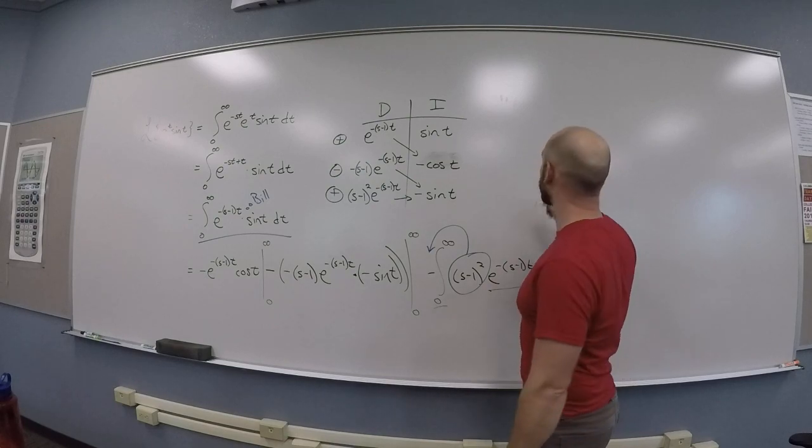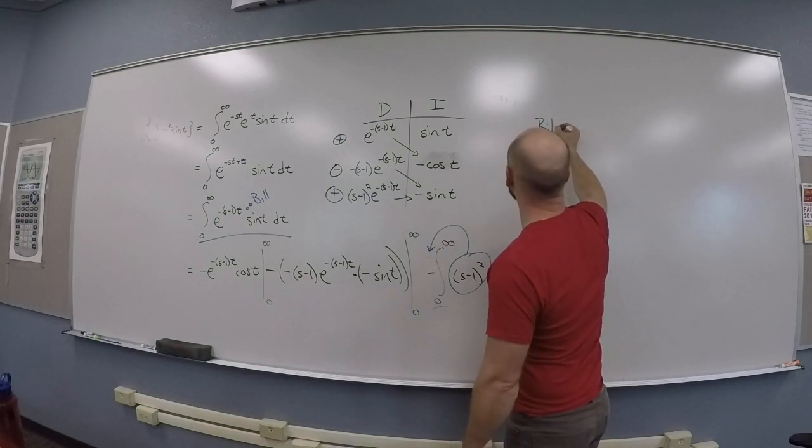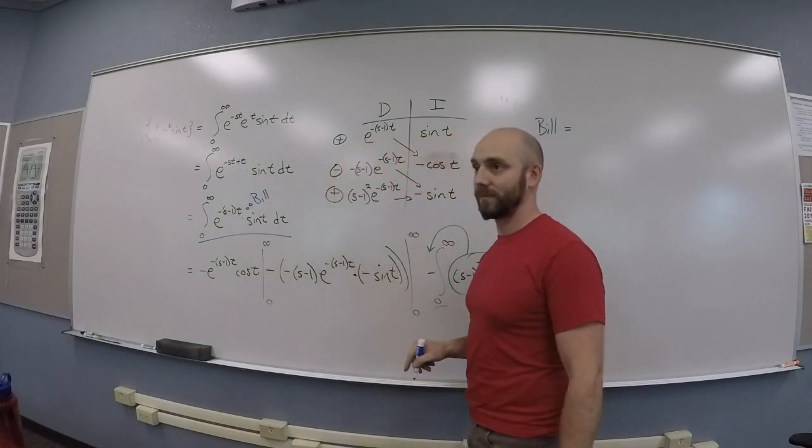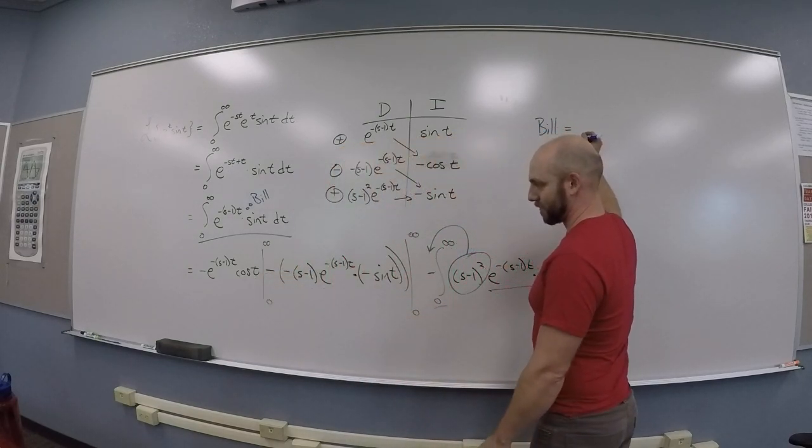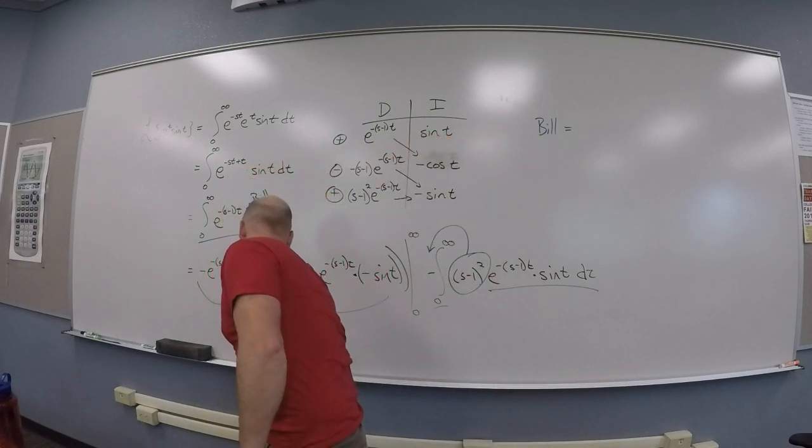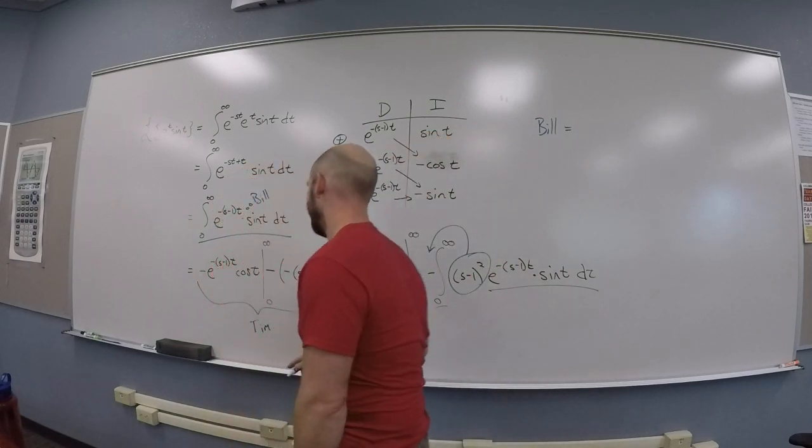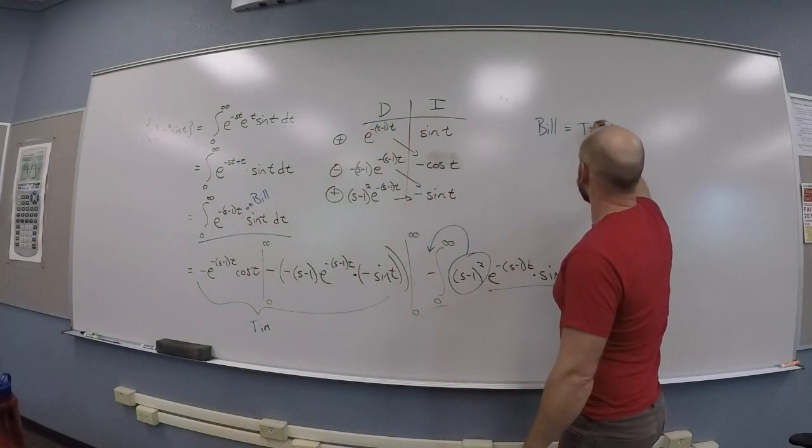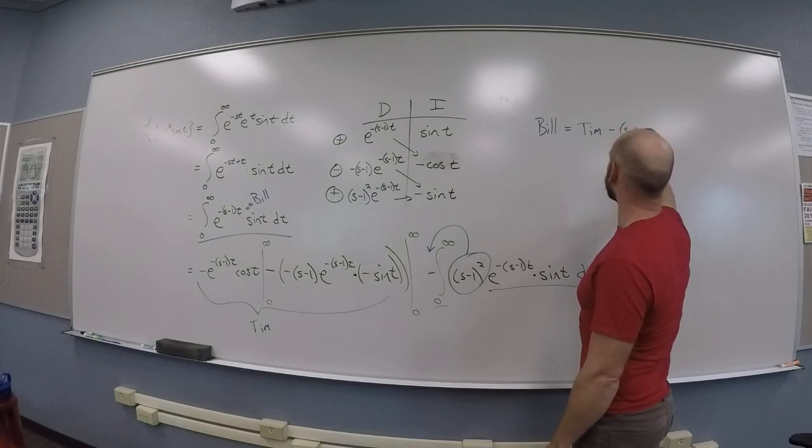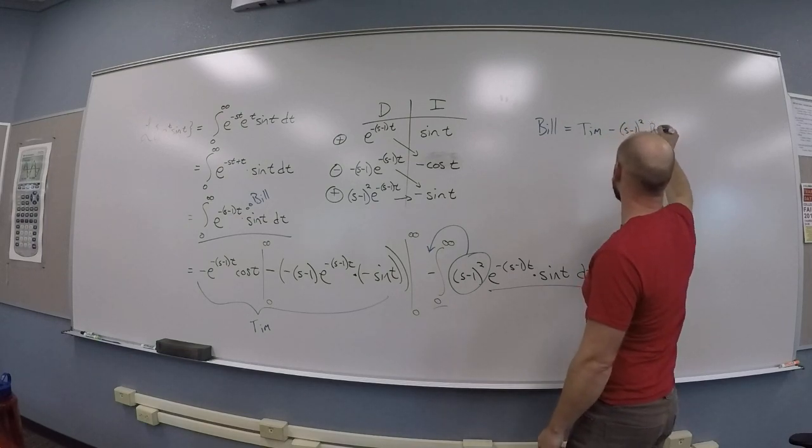Oh, it's just a number. So, what you have, right, is Bill is all this crap. Tim. Yeah, so you can name this whatever you want. Let's call it Tim. So, Bill is Tim minus the quantity of S minus 1 squared times Bill.